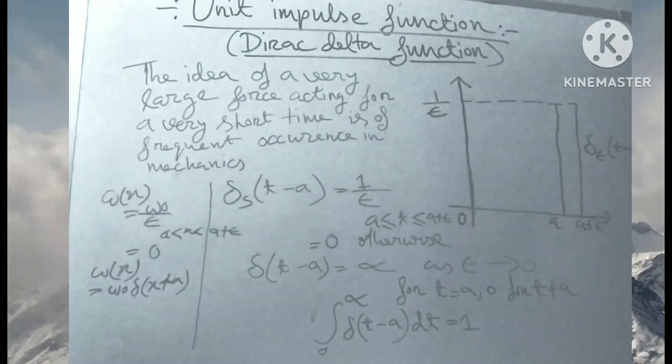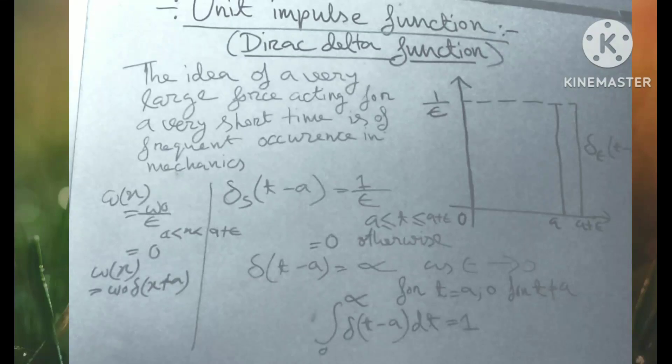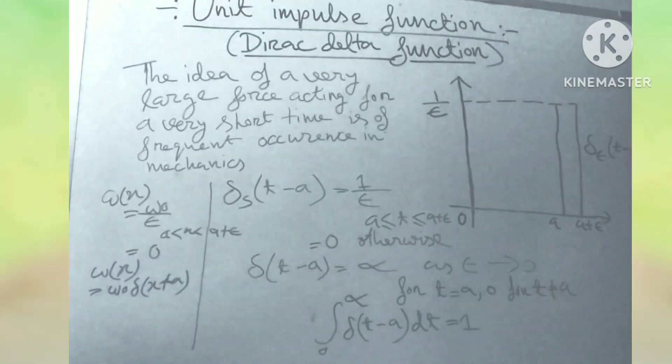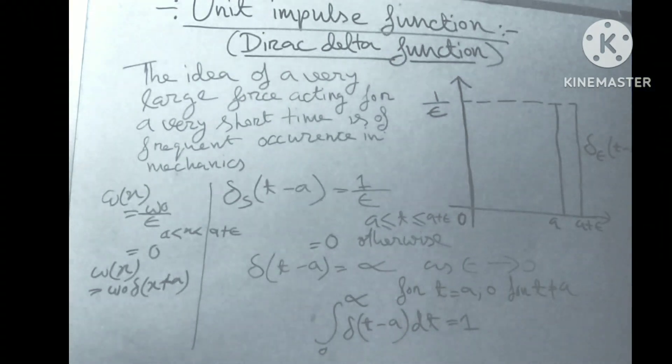To deal with such and similar ideas, we introduce the unit impulse functions, also called Dirac delta functions. Thus, the unit impulse function is considered as the limiting form of a function.